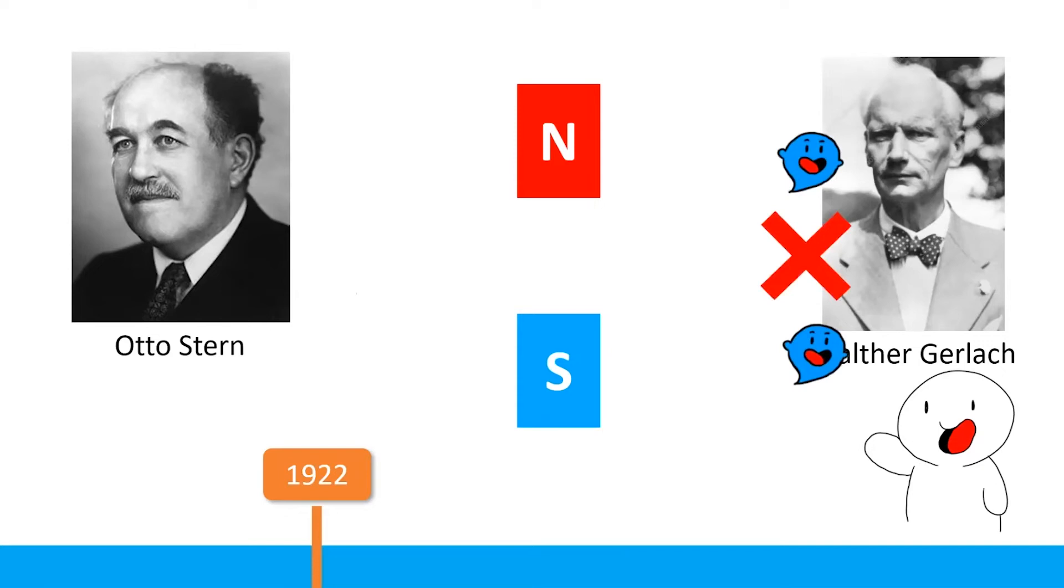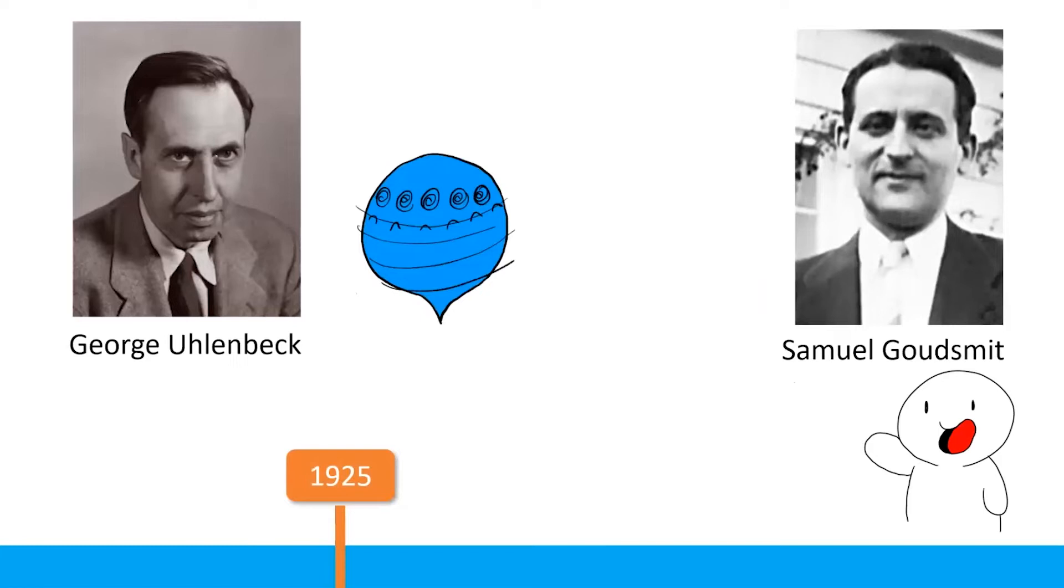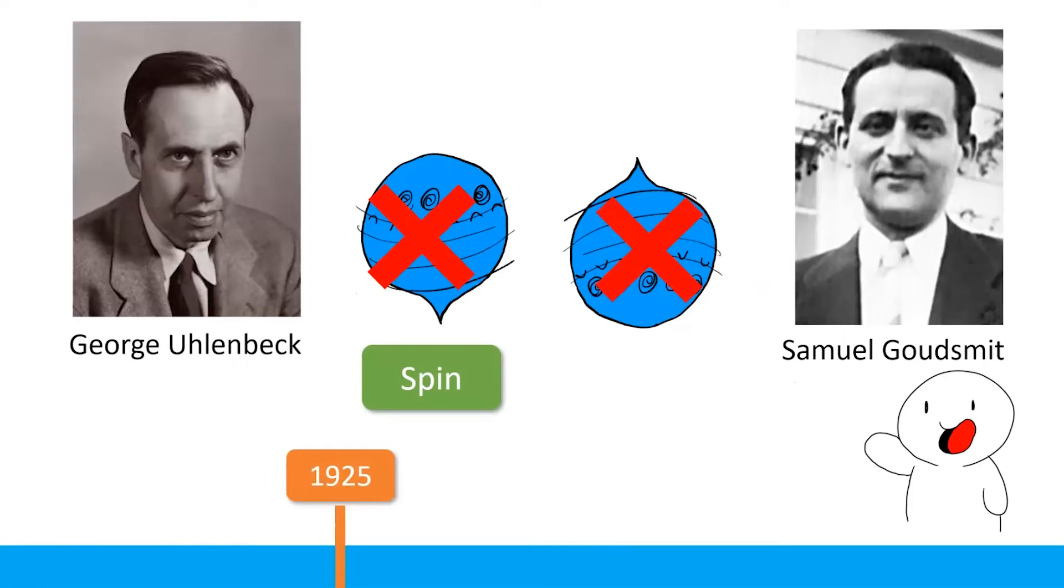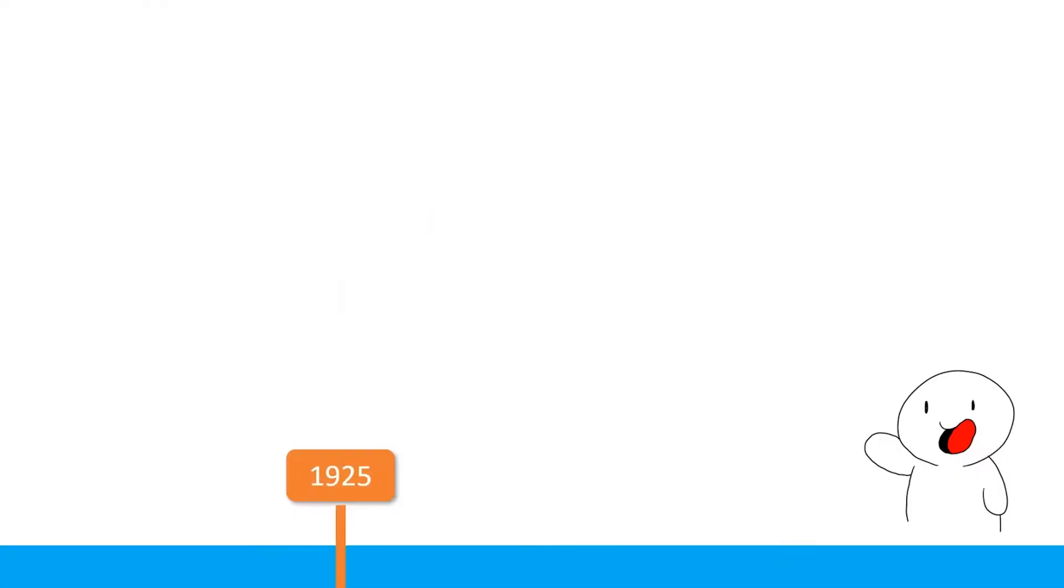So in 1925, George Uhlenbeck and Samuel Goudsmit assumed that this is because electrons spin like a ballet dancer and cause them to behave like mini magnets. Naturally they call this spin. And since there are two spots found in the experiment, physicists just assume they are spin up and spin down. However, this picture is wrong. We now know that this behavior has nothing to do with electron spinning, but it is just an inherent property of the electron itself. But then we still call it spin nowadays because the name is just stuck.